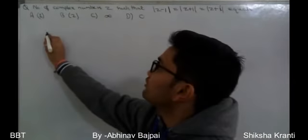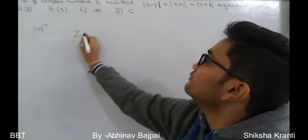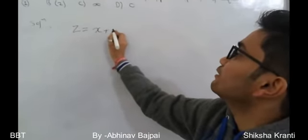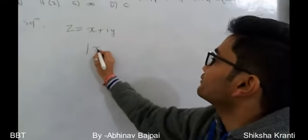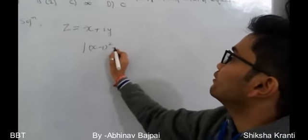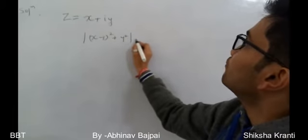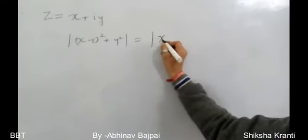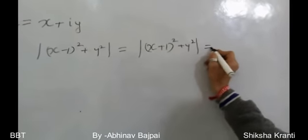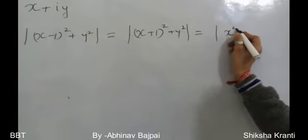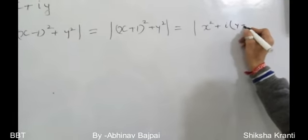To solve this problem, we consider z = x + iy. On substituting into the given conditions, we get the mod expressions: sqrt((x-1)² + y²) = sqrt((x+1)² + y²) = sqrt(x² + (y+1)²).